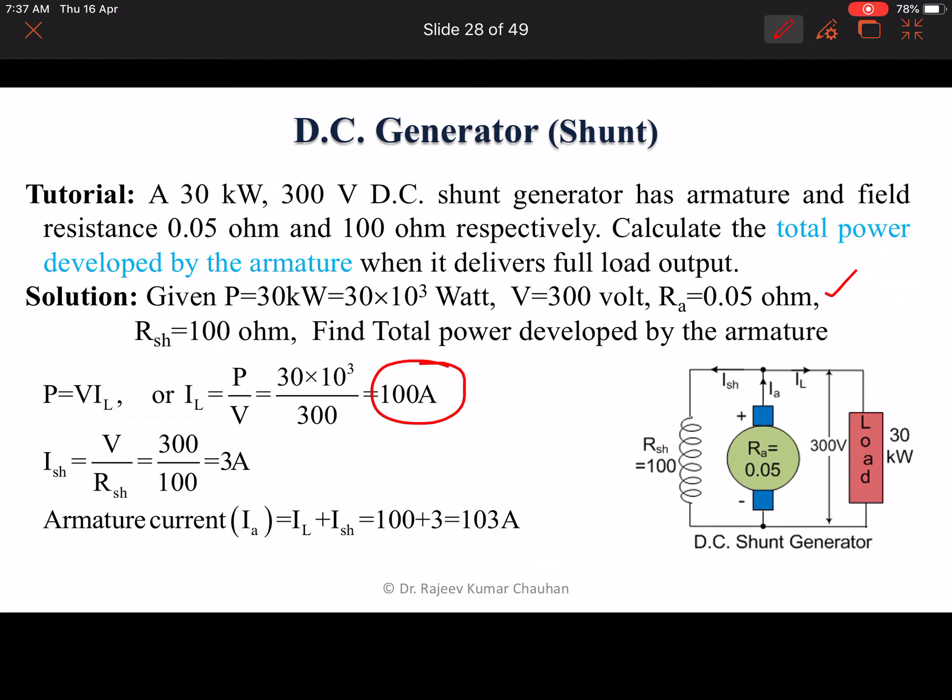In the case of shunt generator, from the circuit we can see the terminal voltage appears across the shunt resistance. It means we can find out the shunt current equals V divided by Rsh, which equals 300 divided by 100 equals 3 ampere.